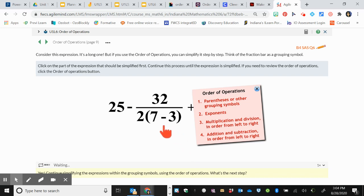Now I move on to the denominator and start back over with the order of operations. I see parentheses. 7 minus 3 equals 4. I don't see any exponents, but I do see multiplication. 2 times 4 equals 8.